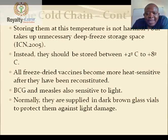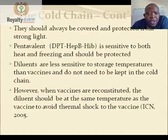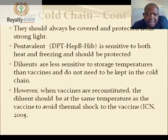BCG and measles are normally supplied in dark brown glass vials to protect them against light damage, and they should always be covered and protected from strong light. Pentavalent, DPT, Hepatitis B, and HIB vaccines are also sensitive to both heat and freezing and should be protected.